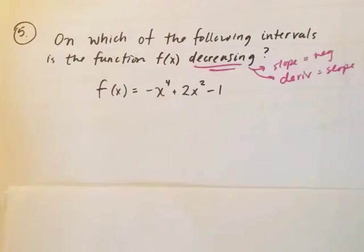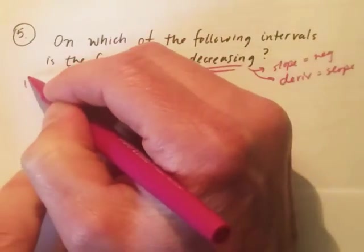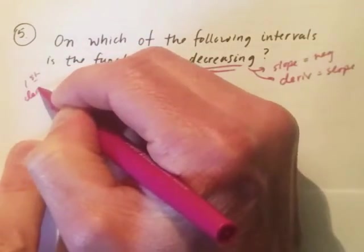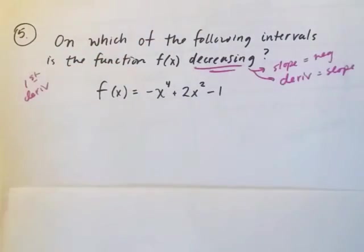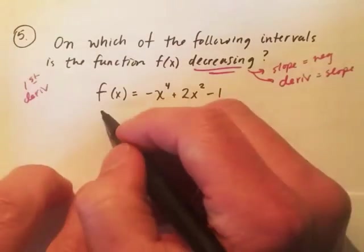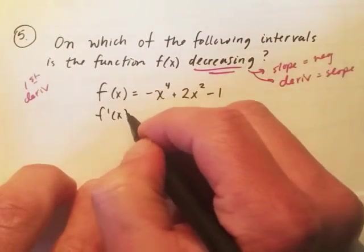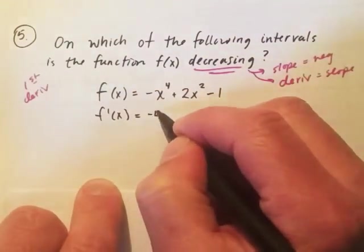So right away I know that I'm going to be doing the first derivative test to find this. When I find my first derivative test, I've got to find my first derivative and identify my critical numbers. So let's find this first derivative by just using the power rule.